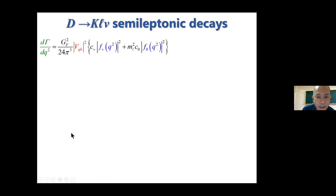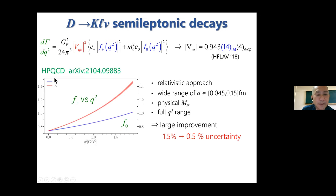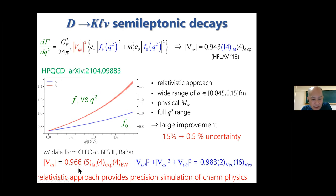The situation is a little bit different for the semileptonic case. Let us consider D→Kℓν. The master formula is the same, but by combining the calculation of the form factor and the experimental measurement, we obtain this. Recently HPQCD collaboration calculated the relevant form factor very precisely. They employed the relativistic approach and simulated a wide region of lattice spacing and physical pion mass, and they improved the accuracy of the lattice calculation from 1.5 percent to 0.5 percent.